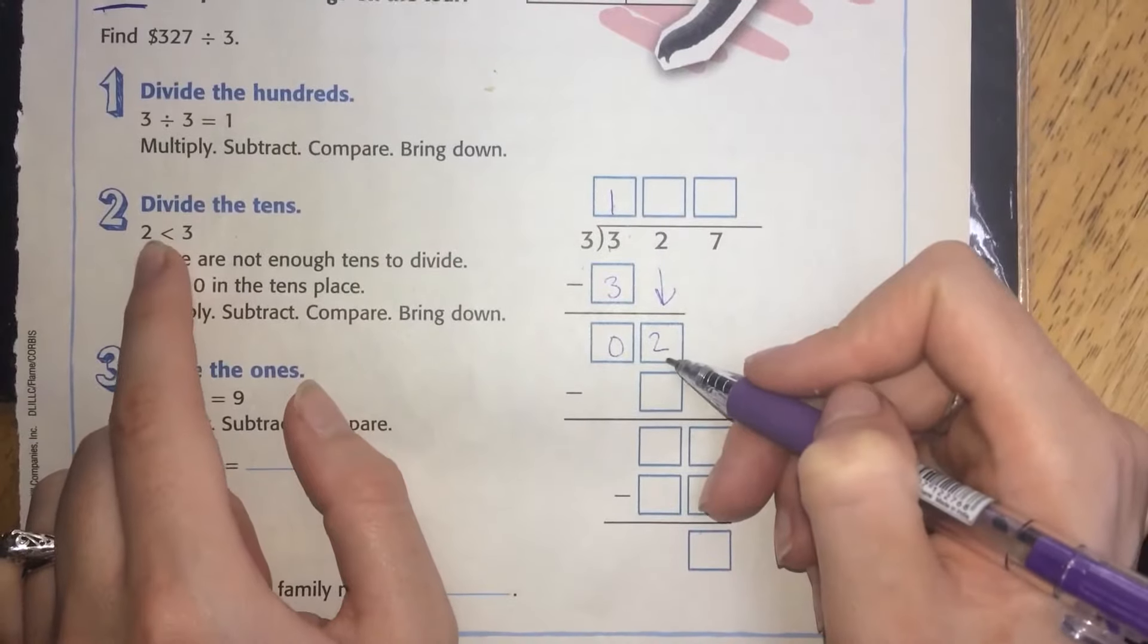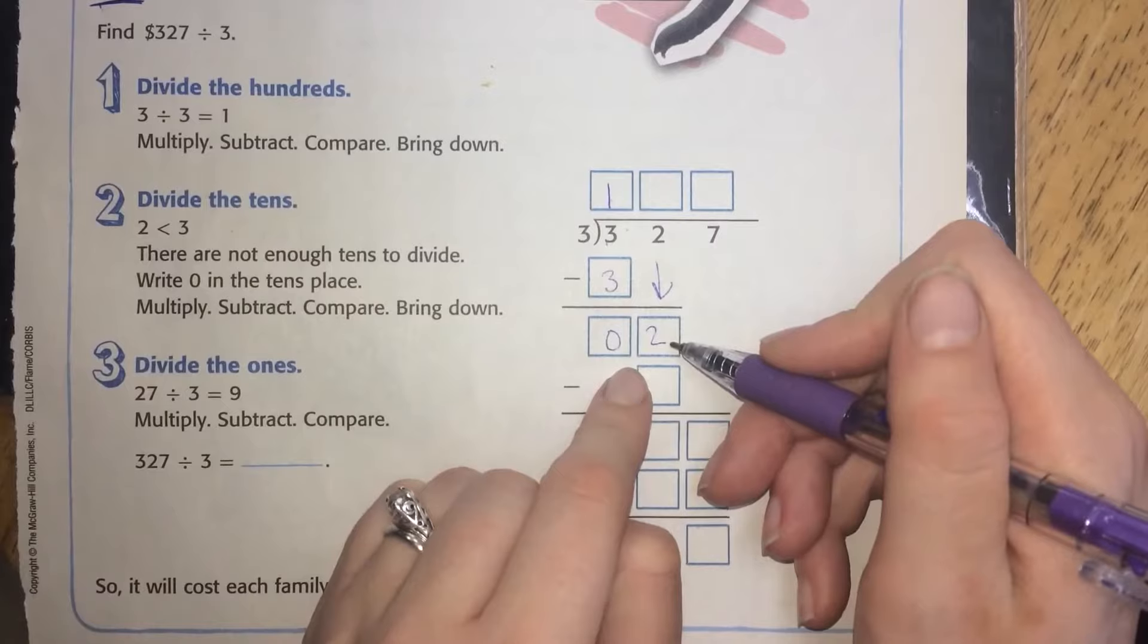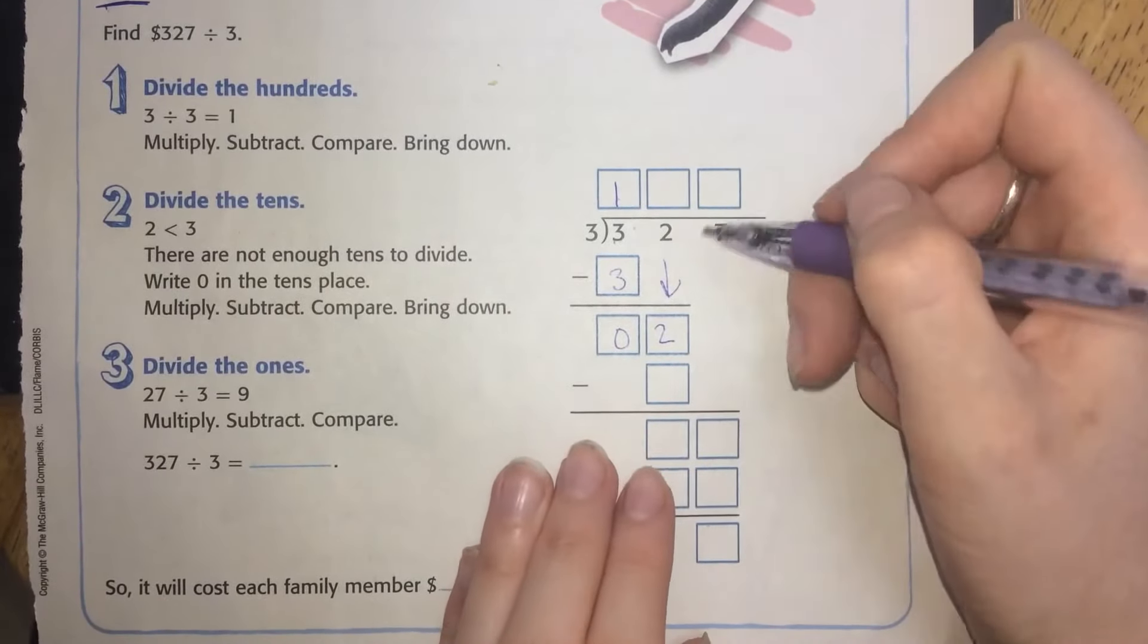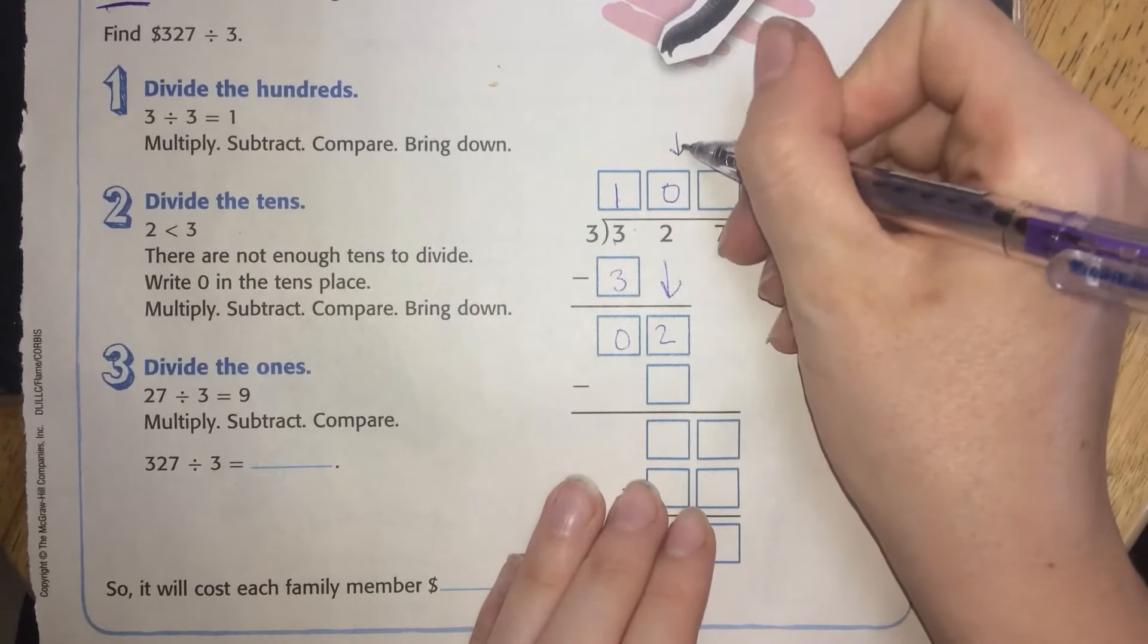2 is less than 3. So 3 is not going to fit into this even one time. So we have to multiply by 0. And this is what this lesson is all about.